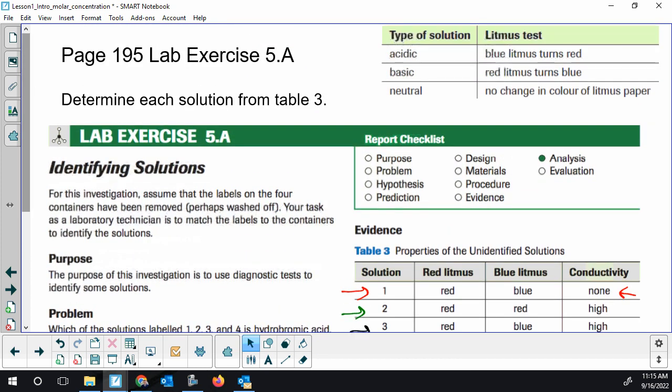So as a little bit of a reminder, you're going to have to know this table at the top for Chem 20. In case you forgot, acidic solutions is when the blue litmus turns red. A basic solution, red litmus turns blue. Neutral solutions, none of the litmus changes.